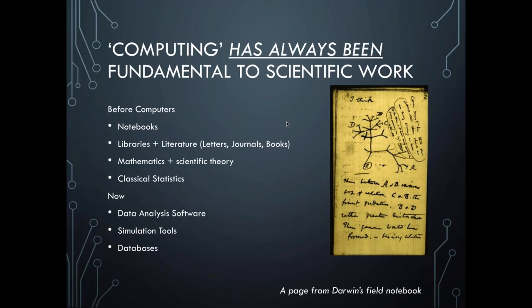Although this is a beautiful representation of how things have evolved, we certainly haven't gotten rid of empirical science or analytical science. The point is that computing — the transformation of information — has always been fundamental to scientific work. Before computers, we had scientific notebooks; this is a page from Darwin's field notebook. We have libraries, literature, mathematics, scientific theory, classical statistics — all structures that help us manipulate information. And now, of course, we have large-scale data analysis methods and simulation tools and databases.